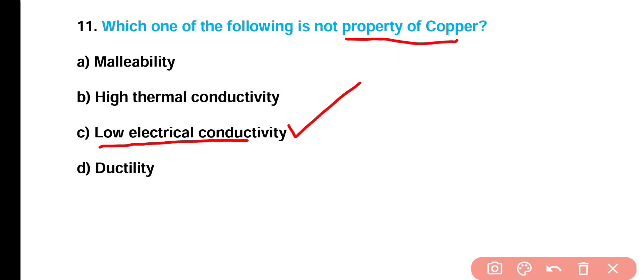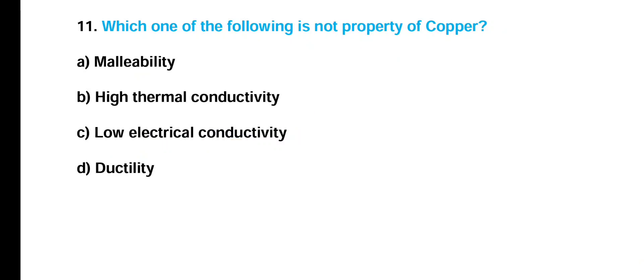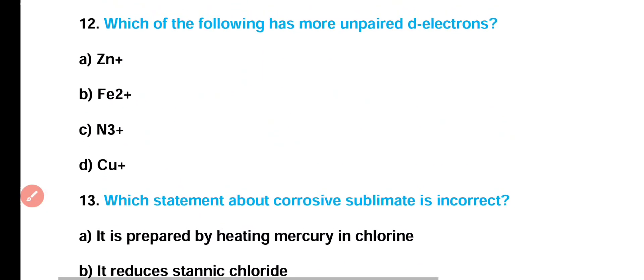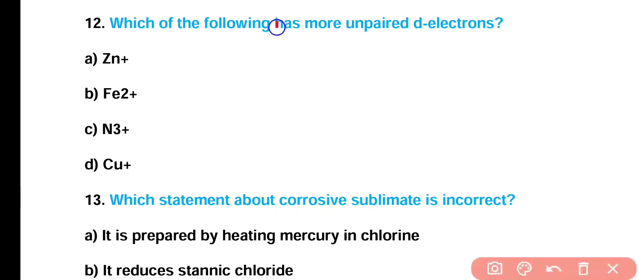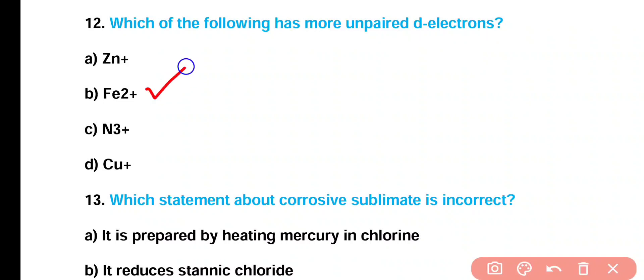High electrical conductivity is the main property of copper. Question number 12: Which of the following has more unpaired d electrons — Zn⁺, Fe²⁺, Mn³⁺, or Cu⁺? Correct answer is option B. Fe²⁺ has the maximum number of unpaired electrons, equal to 5.